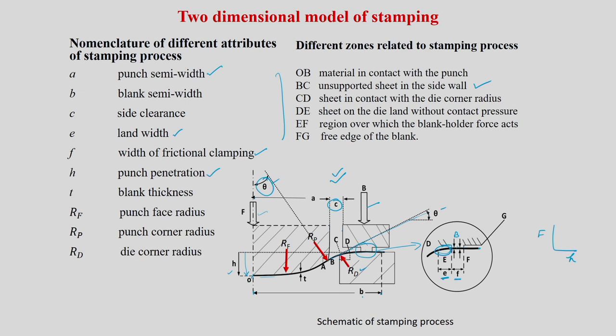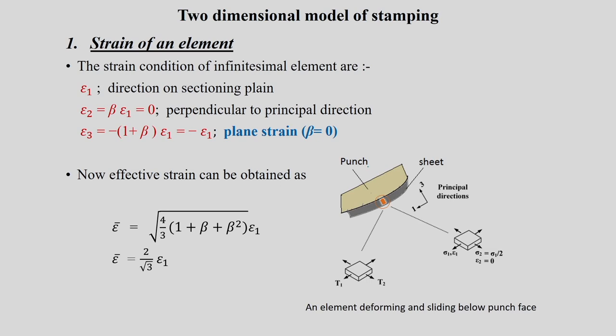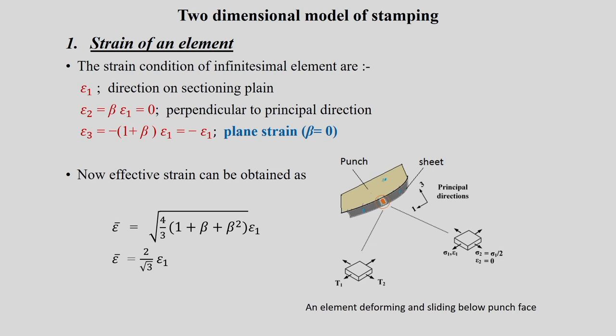We start with strain of an element. Assuming a rigid punch and picking up a small element in the sheet below it, the directions are defined as: direction 1 — along the sheet in the sectioning plane; direction 3 — perpendicular to direction 1 in the sheet plane; and direction 2 — perpendicular to the plane of the diagram (out of plane). We are seeing an element deforming and sliding below the punch face, anywhere in this region.